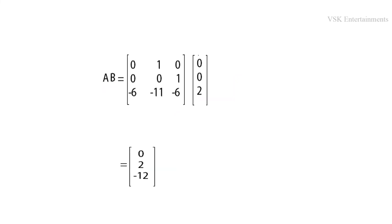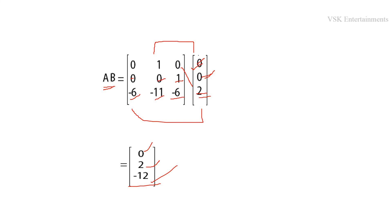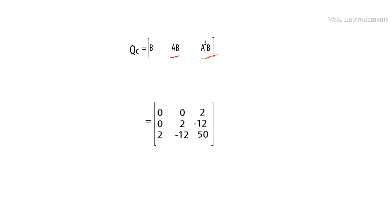Next, we find AB: row 1: 0×0 + 1×0 + 0×2 = 0; row 2: 0×0 + 0×0 + 1×2 = 2; row 3: -6×0 + (-11)×0 + (-6)×2 = -12. So AB = [0, 2, -12]ᵀ. Substituting B, AB, and A²B into QC: QC = [[0, 0, 2], [0, 2, -12], [2, -12, 50]].